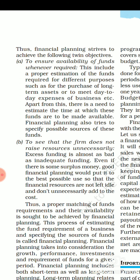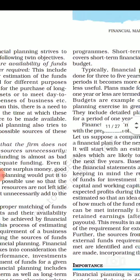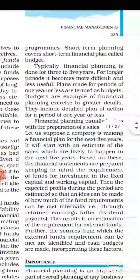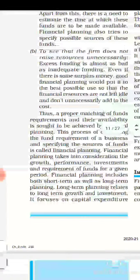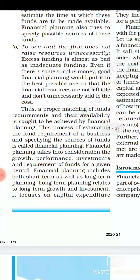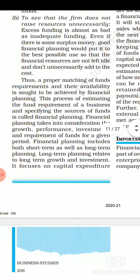Financial planning is basically a process where we estimate and predict the requirement of funds for future operations, available within the right time and in the right quantity. When we talk about financial planning, it can be categorized into two ways: short-term and long-term. Financial planning is done either as a short-term plan or a long-term plan.